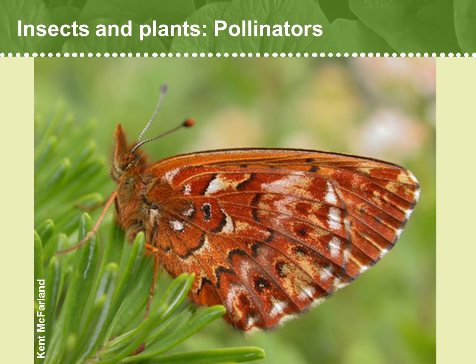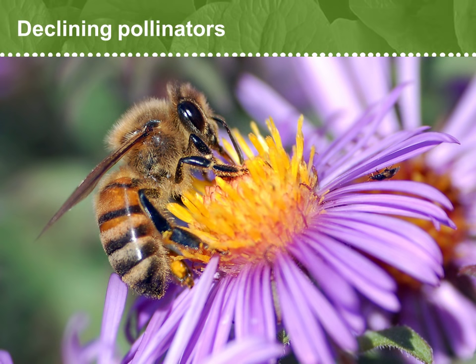Meet the White Mountain Fritillary, a butterfly species known only from high alpine zones in the White Mountains of New Hampshire, which worldwide, as a species, only numbers in the hundreds. We've also been hearing in the news a lot about an alarming decline in important insect pollinators, such as monarch butterflies and bumblebees. Many factors contribute to this phenomenon, including widespread use of pesticides, habitat destruction that removes plants that pollinators need, and diseases and parasites that are afflicting insects.